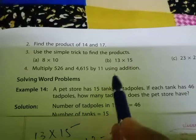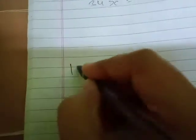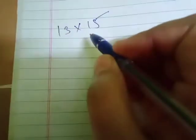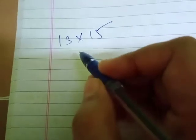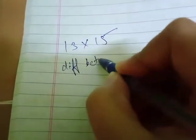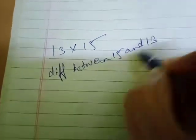I'll solve 13 times 15. Pay attention - 13 times 15 is your question. We have to solve this using the simple trick. First, the difference: 15 minus 13 is 2, right? So the trick can be followed.